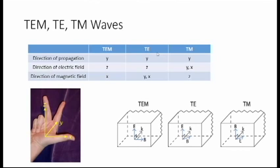A TE wave or transverse electric wave has one component of electric field and two components of magnetic fields. The components for a TM wave or transverse magnetic wave are vice versa — one component of magnetic field and two components of electric field. When we say TE has two components of magnetic field, it means the magnetic field vector for TE is not parallel to a particular coordinate. As you can see in the figure, the magnetic field is tilted for TE, meaning it has two components.